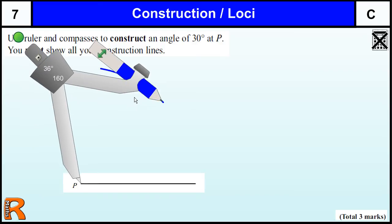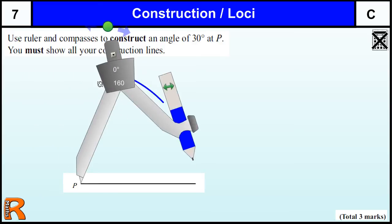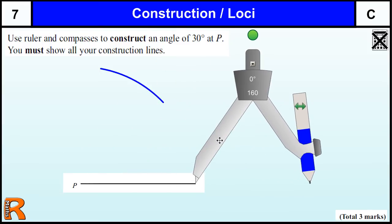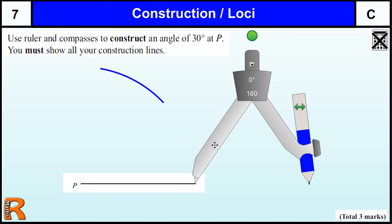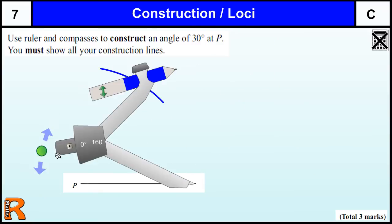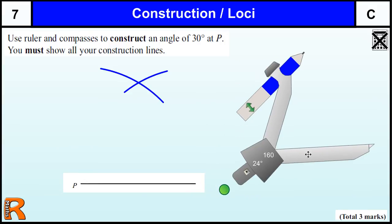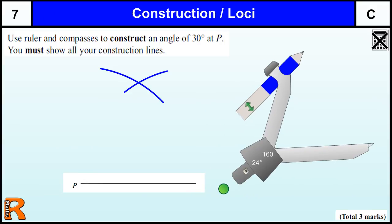So to construct an equilateral triangle, we get our compass, open it up so it's the same length as the whole line. Put it on one end, put it on the other. Try and get it nice and accurate. And then we mark the top of the triangle where the two arcs cross. That's our 60-degree angle.